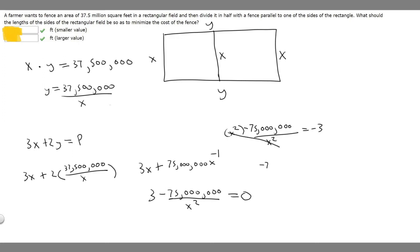Then we'll get minus 75,000,000 is equal to minus 3x squared. And then if we divide both sides by minus 3, this is going to give us 25,000,000. So 25,000,000 equals x squared.